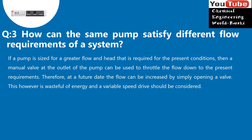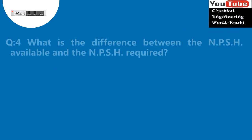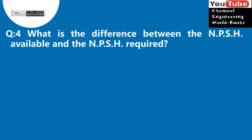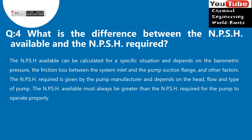Question 4: What is the difference between the NPSH available and the NPSH required? The NPSH available can be calculated for a specific situation and depends on the barometric pressure, the friction loss between the system inlet and the pump suction flange, and other factors. The NPSH required is given by the pump manufacturer and depends on the head, flow, and type of pump. The NPSH available must always be greater than the NPSH required for the pump to operate properly.